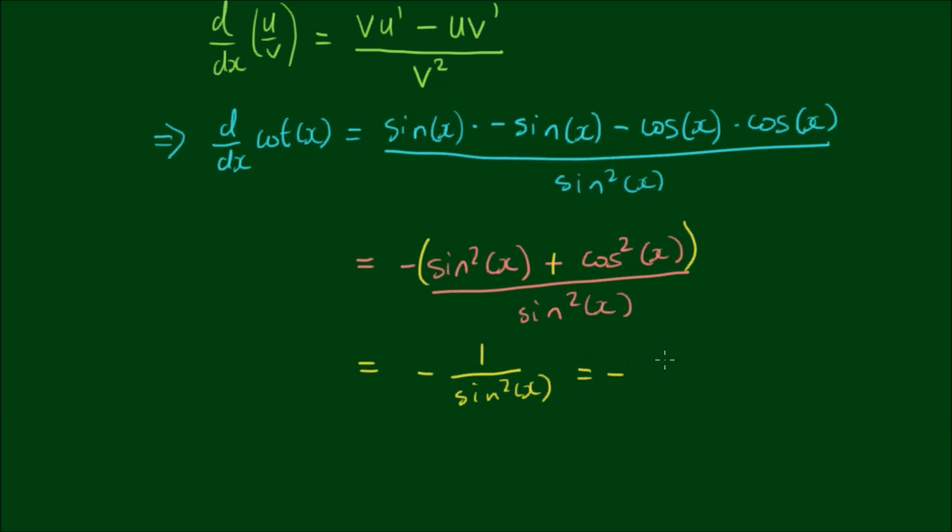And we can rewrite that as negative outside of 1 divided by sine of x all squared, since 1 squared is equal to 1. And here we have another reciprocal identity, in that cosecant of x is equal to 1 over the sine of x. And cosecant is often abbreviated to csc.